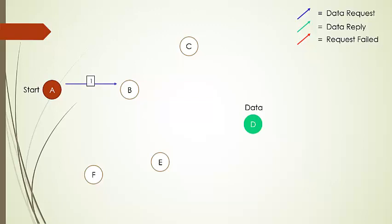So A sends the request to B. B is not having the data, so it sends the request to the next most likely node, which is C. C is also not having the data and cannot further forward my request. So the request fails here and comes back to B.